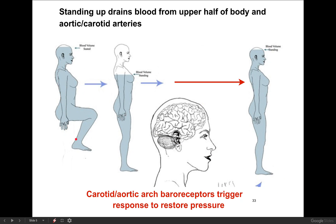If you're sitting down or lying down, it's pretty easy for blood to flow evenly throughout the entire body. But if you suddenly stand up very quickly — like maybe you wake up in the morning and just jump out of bed — what literally happens is, due to gravity, blood will actually start draining downwards towards your lower extremities. That means there is less blood in the carotid arteries and in the aorta, and the pressure in these arteries has dropped.